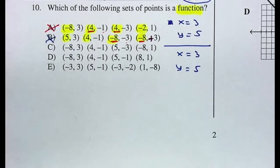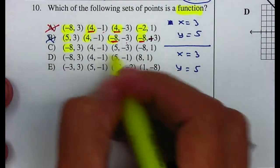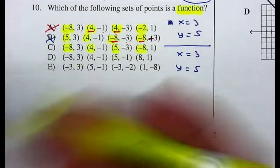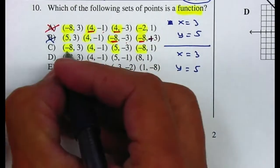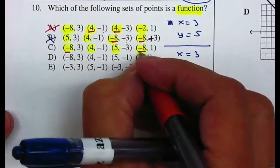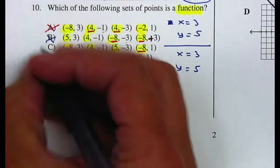On letter C, we have a negative 8, a 4, a 5, and a negative 8. Once again, you cannot have a negative 8 give you a 3, and then the next time you plug in a negative 8 and give you a 1. So that's not a function.